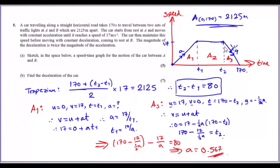For A3: the initial speed is 17, final speed is 0, deceleration is minus half A, and the time taken is between 170 and T2. Using the same formula and plugging in, you get an equation in terms of T2. The reason we find T1 and T2 this way is so we can substitute back into the equation T2 minus T1 = ΔT, giving an equation purely in terms of A.